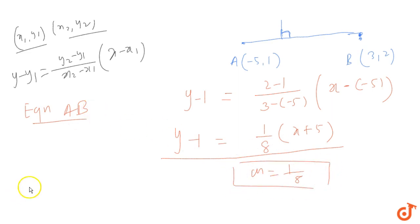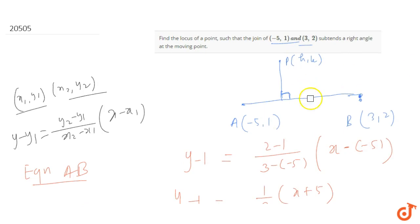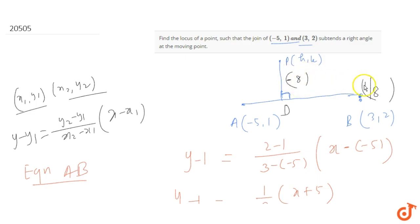We know that whenever two lines are perpendicular to each other, if their slopes are m1 and m2, then m1 times m2 equals minus 1. The slope of AB is 1/8, so the slope of the perpendicular line PD will be minus 8, because (1/8) times (minus 8) equals minus 1.